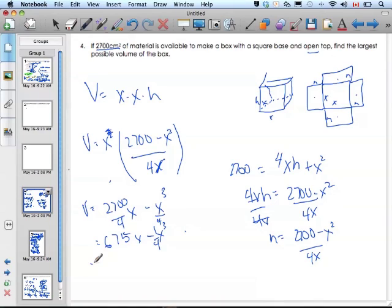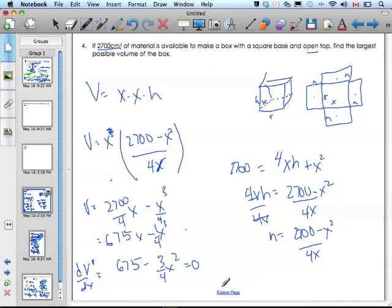So the derivative of volume with respect to x is going to be 675 over 4 minus, bring the 3 down, 3 quarters x squared. I'm going to set it equal to 0, because I want a maximum. And if I do that, I end up with 675 over 4 equals 3 quarters x squared.